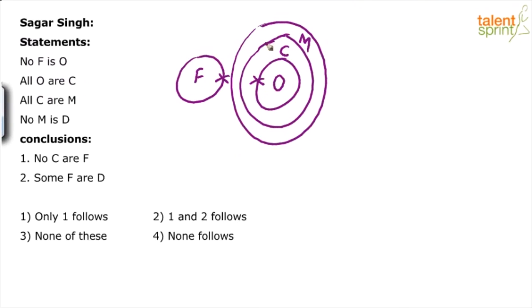No F is O, all O are C, all C are M. And there is one more statement: No M is D. So let me draw D here. No M is D, so M and D cannot overlap.